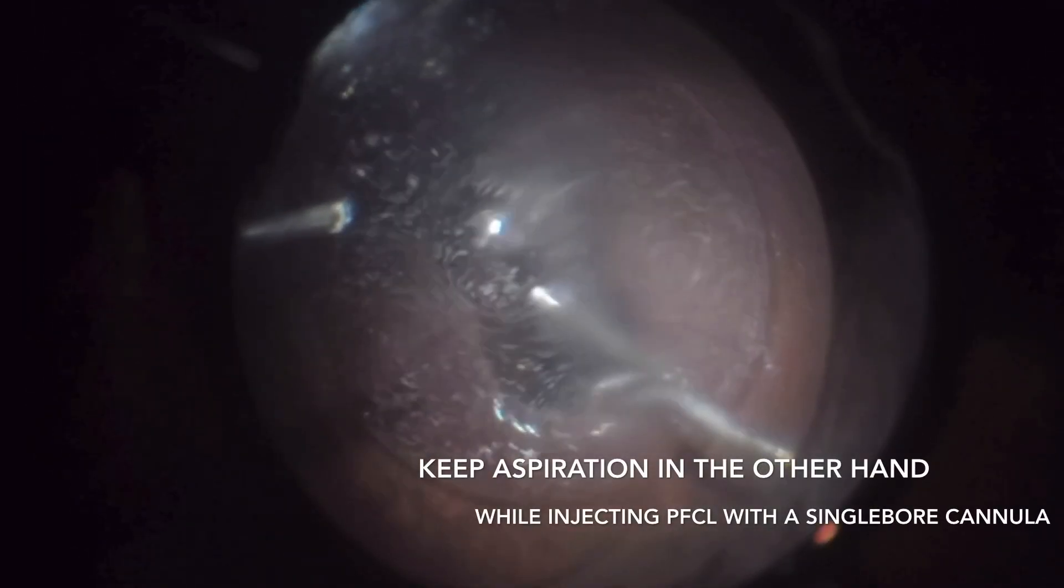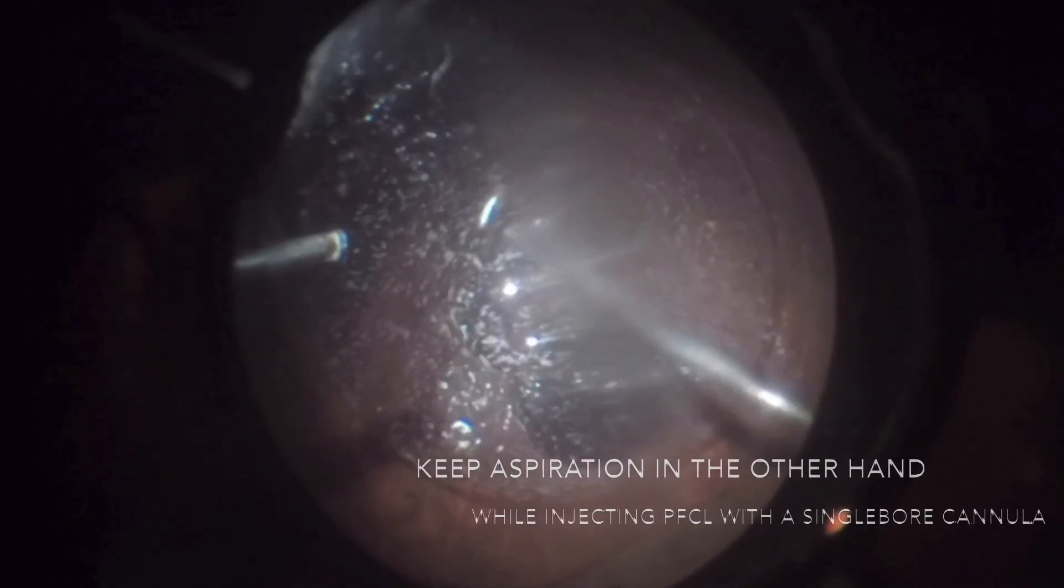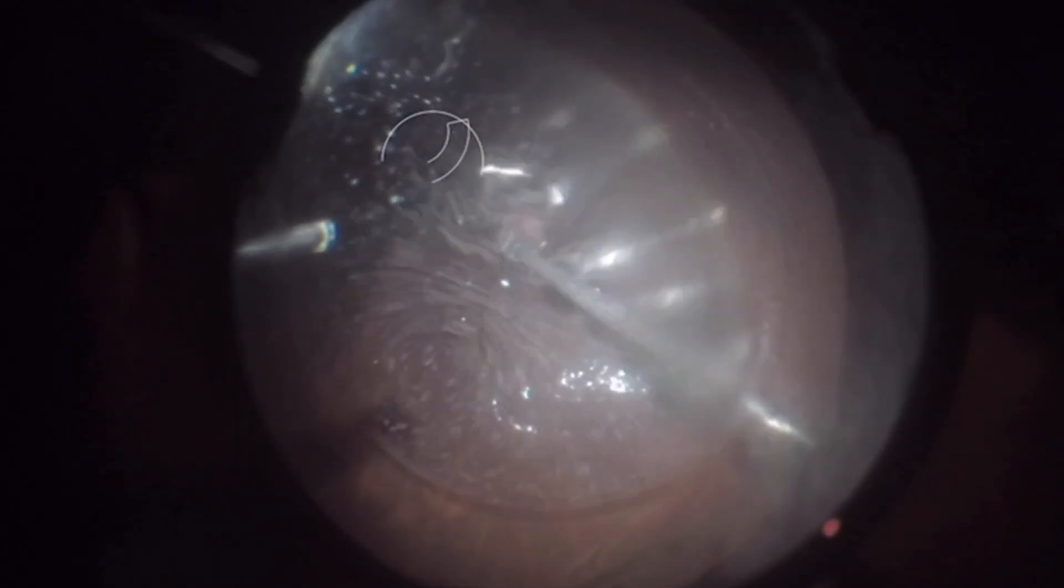An alternative technique involves injecting perfluor with the dominant hand while simultaneously aspirating fluid with the vitrector held in the non-dominant hand. This method helps balance the IOP and effectively control the injection flow.